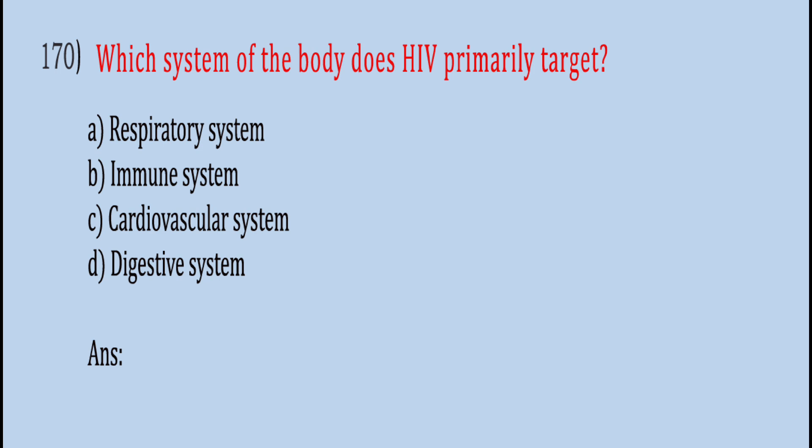Which system of the body does HIV primarily target? Respiratory system, immune system, cardiovascular system, or digestive system. The correct answer is B, immune system.